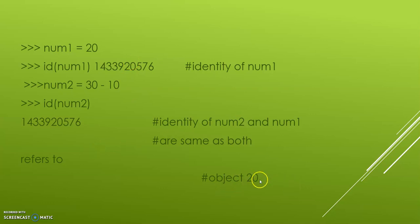Because the object is 20. Why is the object 20? num1 has the value of 20. num2 is 30 minus 10. 30 minus 10 equals 20. So the object value is the same. That is why the identity of num2 and num1 are the same.